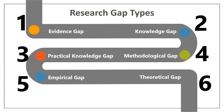These are the six research gap types primarily discussed. Other than this, there might be one more gap represented as the population gap, which is not of great importance. Kindly go through the videos of our channel and like and suggest whatever comments you have to give for developing more content.